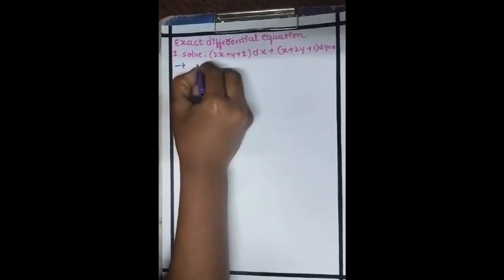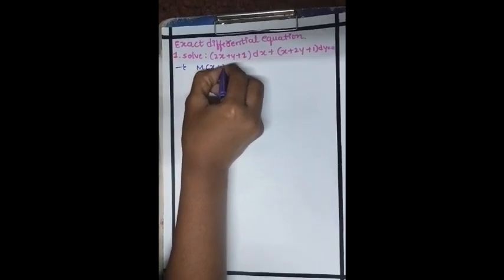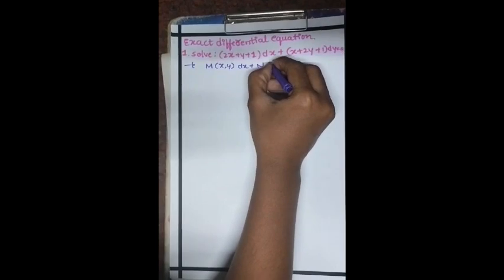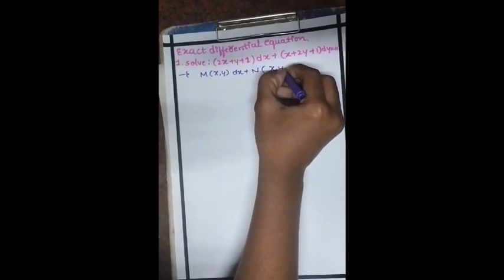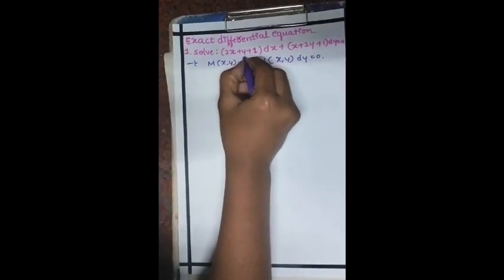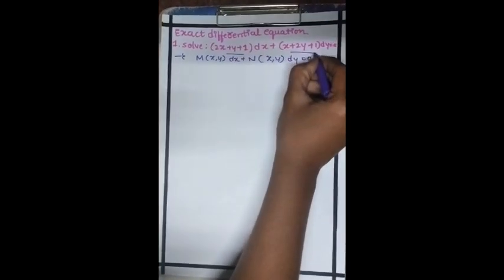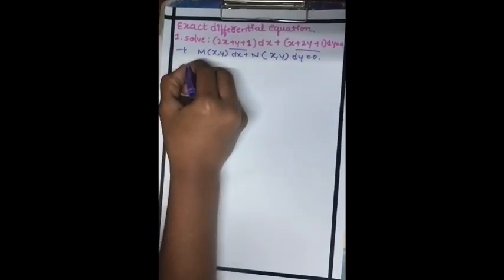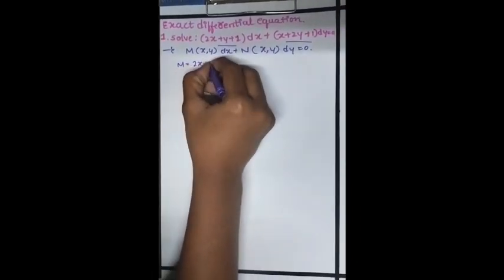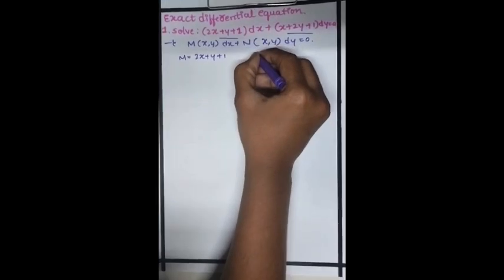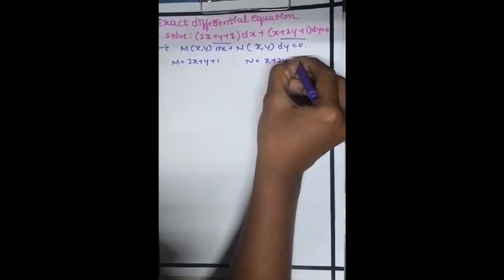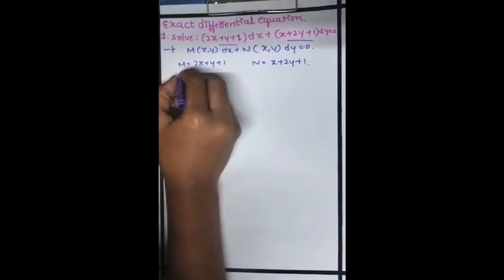Is in the form M of x comma y into dx plus N into x comma y into dy equal to 0. We have to consider this as M and this is N. M is equal to 2x plus y plus 1 and N is equal to x plus 2y plus 1.